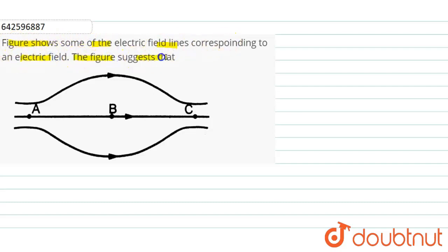The figure suggests that at point C and at point A, the electric field density is the same and greater than at point B.